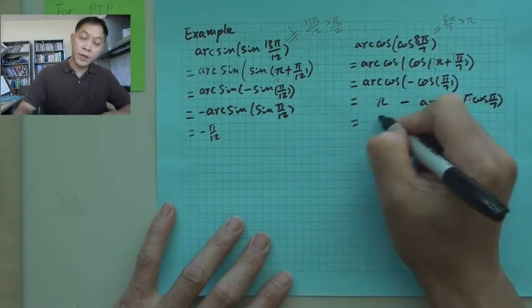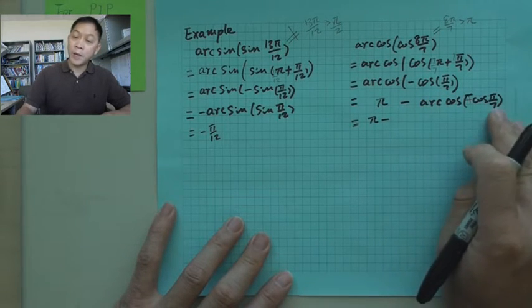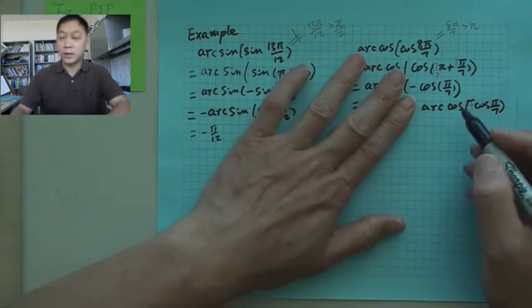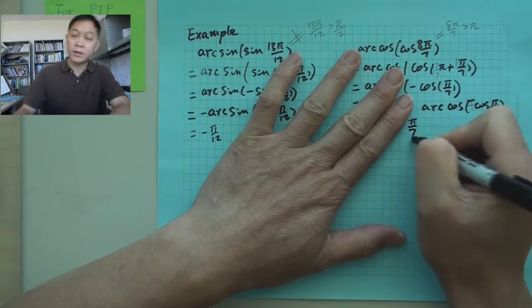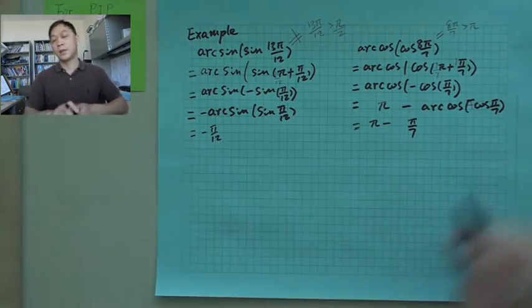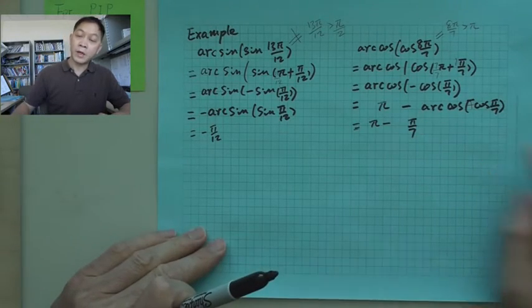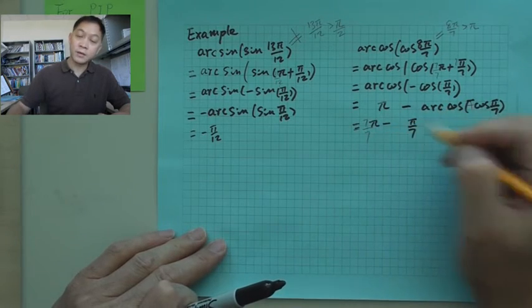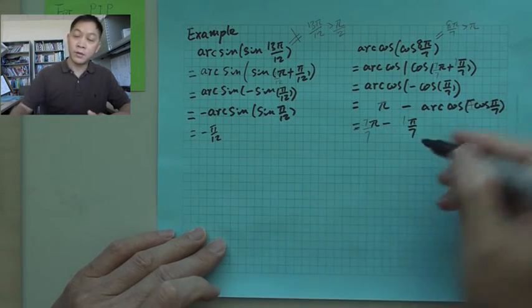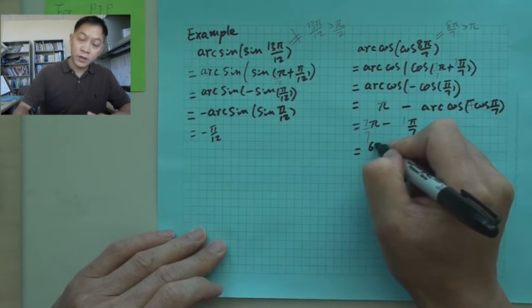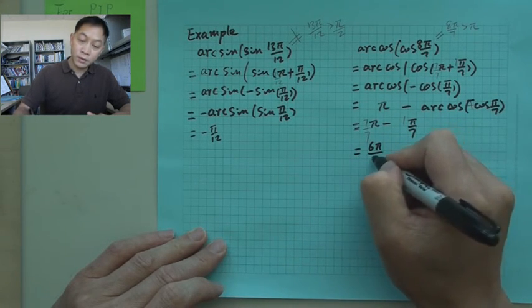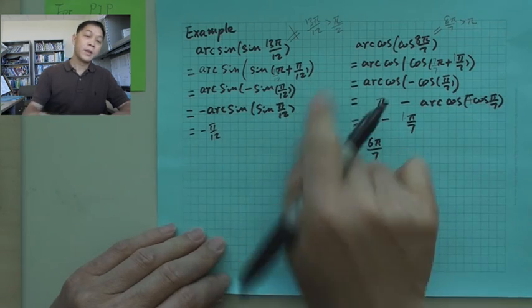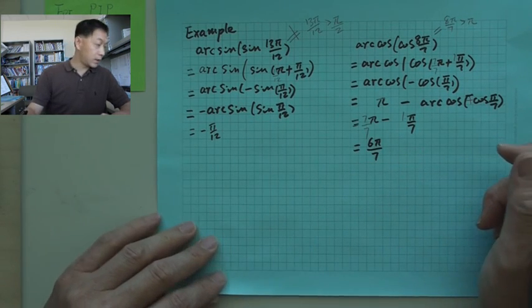So what we get, it will be pi minus this one, pi over 7 is between 0 and pi, so this one comes out directly, that's pi over 7. And then you have pi minus pi over 7, and here will be 7 over 7 minus 1, so what you get will be 6 pi over 7. So we did for arcsine and arccosine.